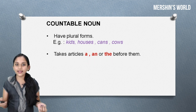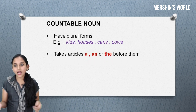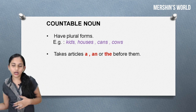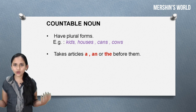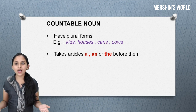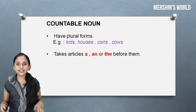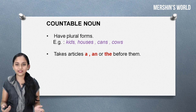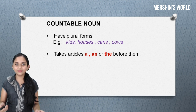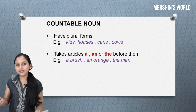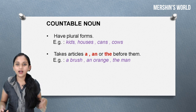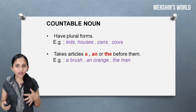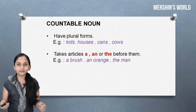They take articles 'a', 'an', and 'the'. If you don't know what an article is, you can check out my article video. Examples are: a brush, an orange, the man.